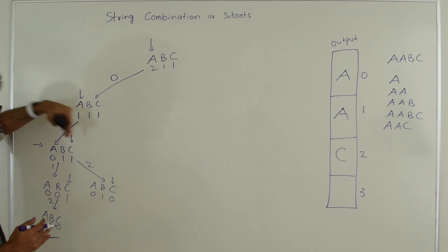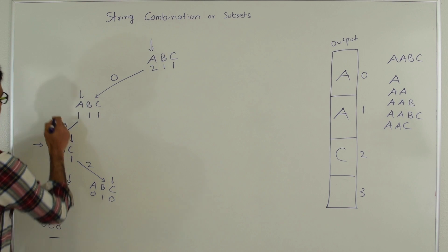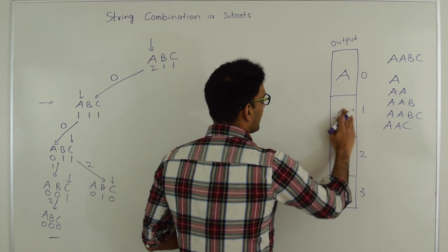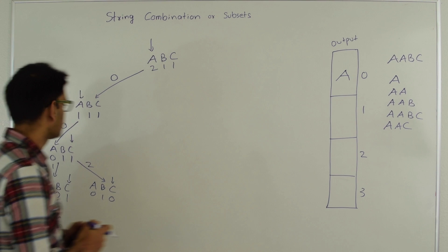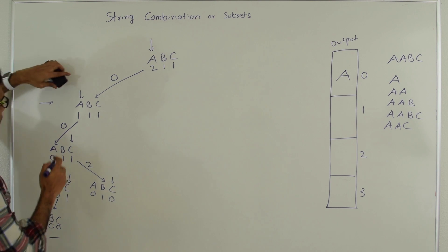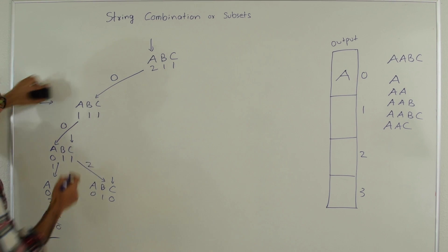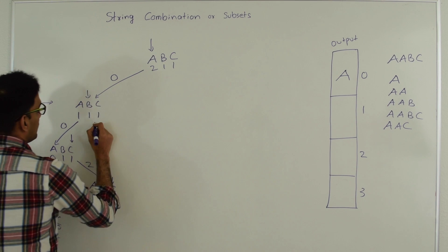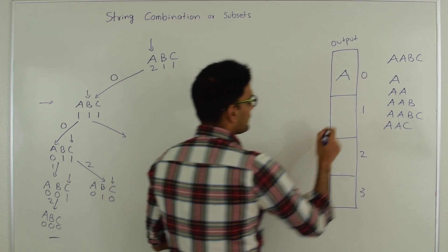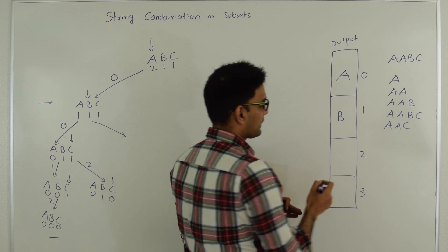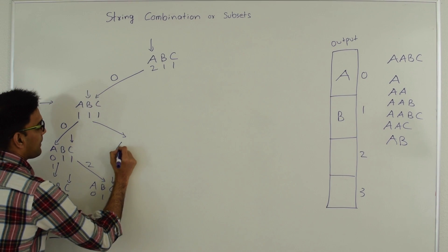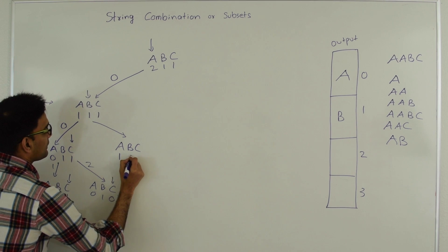We've reached the rightmost end at this level too, so we backtrack to the level where we first picked A. We remove elements from the output array while backtracking. Last time in the recursion we started from A, so now we go to B — the next available character after A. We put B into the 0th position of the output array, print AB, and go into the recursion passing index 1 and decrementing B's count.